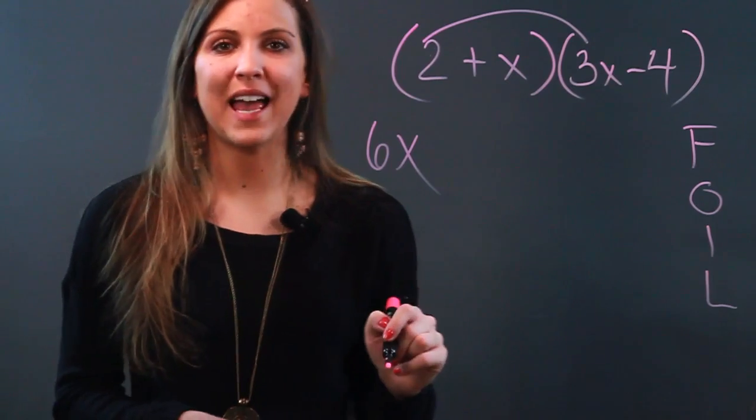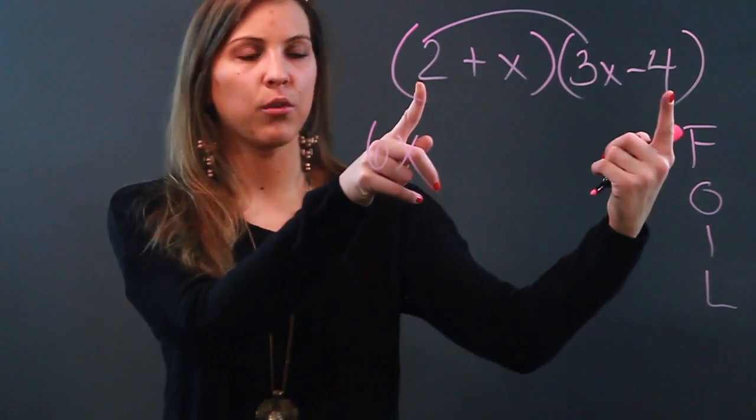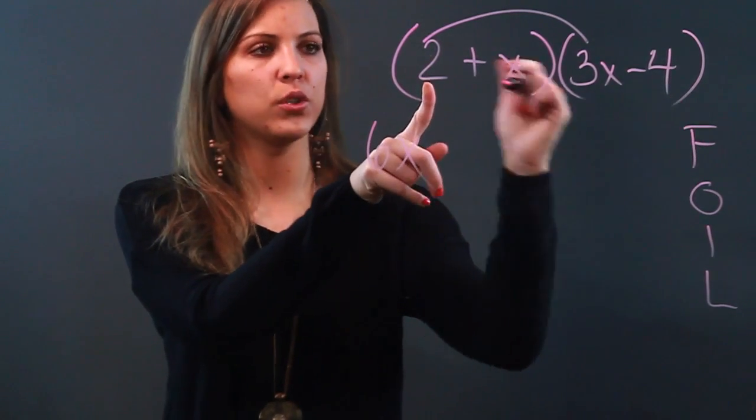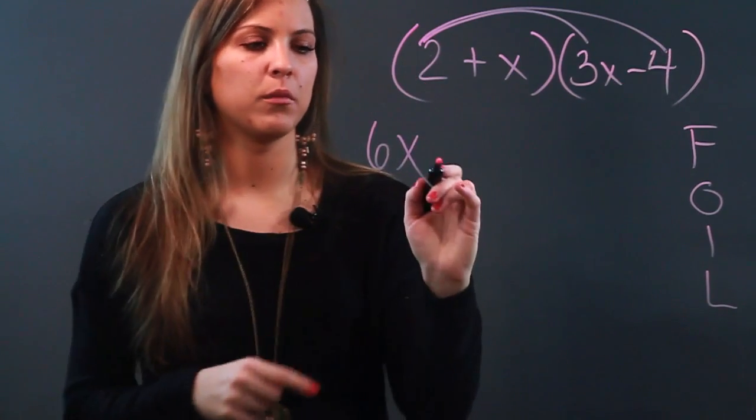Now we're looking at O. O means outer. So now we're looking at the outermost terms. So I'm looking at 2 times negative 4, which is negative 8.